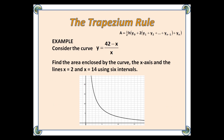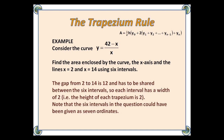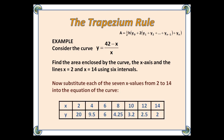Example. Consider the curve y equals (42 minus x) over x. Find the area enclosed by the curve, the x-axis, and the lines x equals 2 and x equals 14, using six intervals. The gap from 2 to 14 is 12, and has to be shared between the six intervals, so each interval has a width of 2 — i.e. the height of each trapezium is 2. Note that the six intervals in the question could have been given as seven ordinates. Now substitute each of the seven x-values from 2 to 14 into the equation of the curve, as shown in that table.